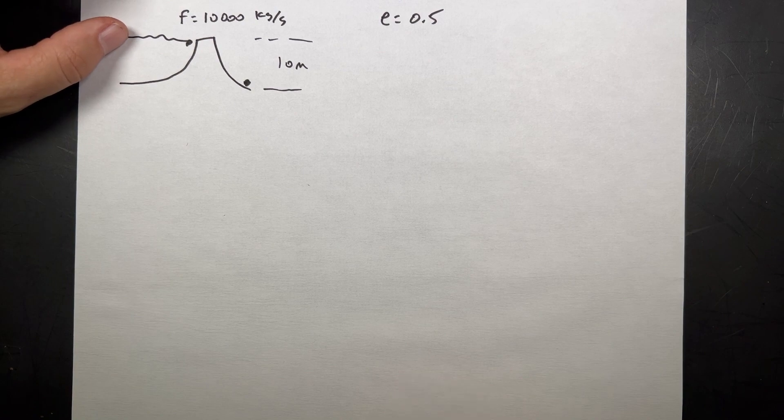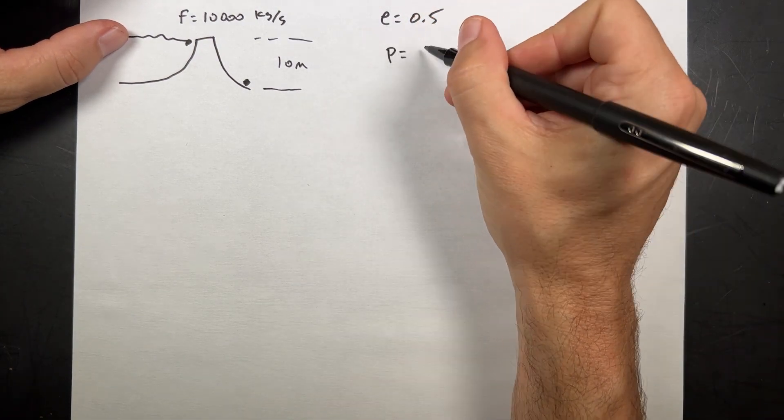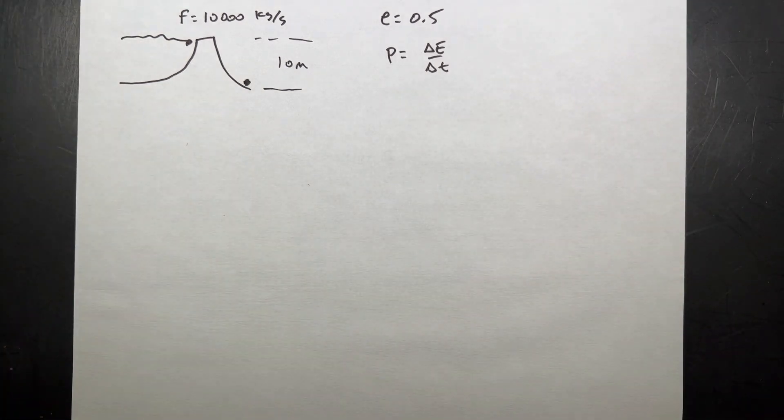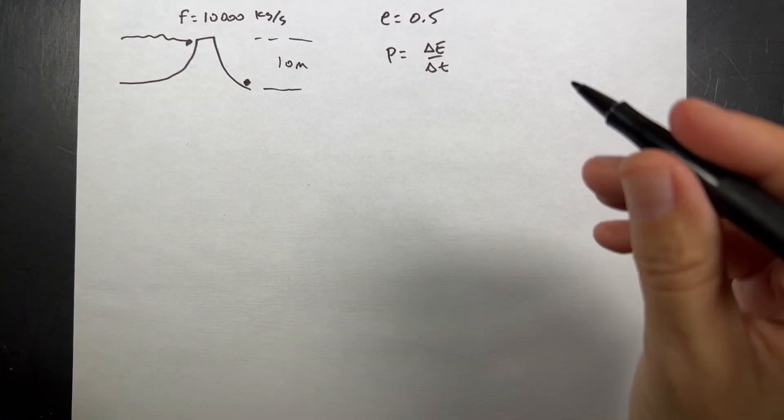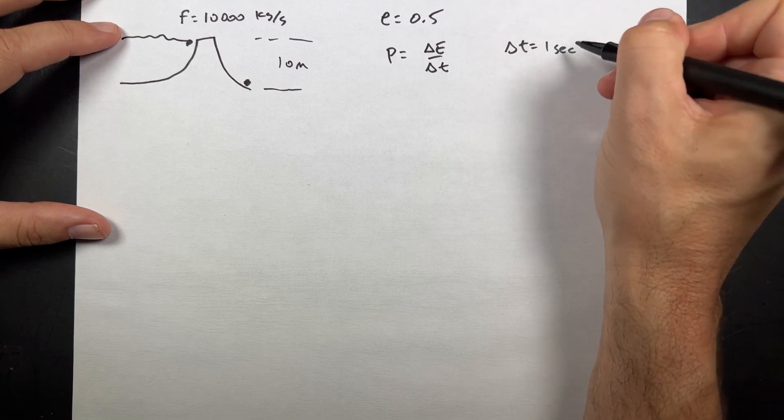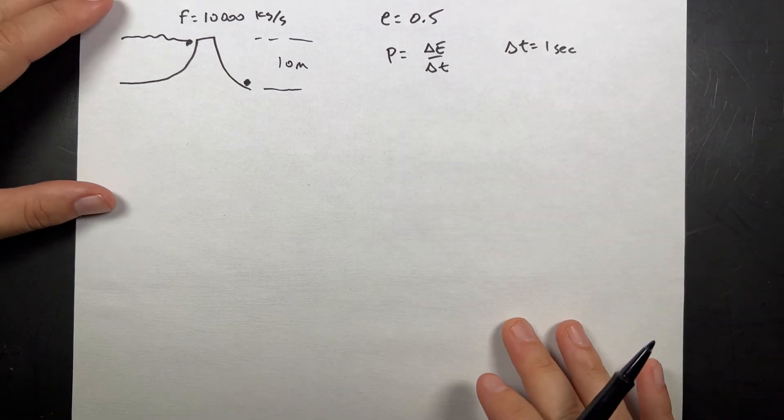So we want to calculate the power, which is the change in energy per time. So I don't know the time. I'm just going to pick the time. Let's just pick delta T is one second. And then it will all work out in the end. Trust me.